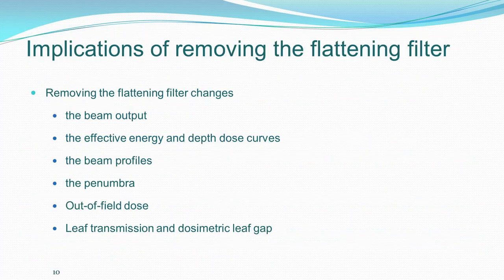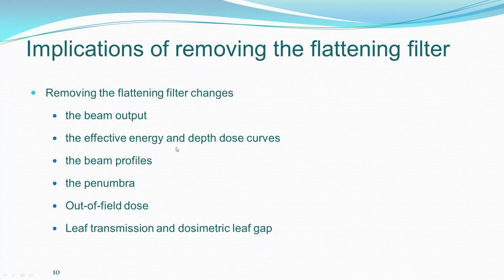What are the implications of removing the flattening filter? Removing it is not simple. Beam output increases because there is no attenuation by the flattening filter. The effective energy is decreased, so depth-dose characteristics will be different. Beam profiles undergo very different changes — the profile is not the same, the penumbra changes, and how to measure penumbra becomes a question. Out-of-field dose is advantageous. You also have to consider leaf transmission and dosimetric leaf gap.